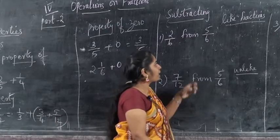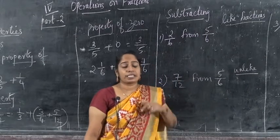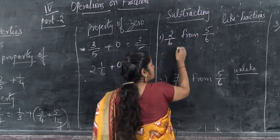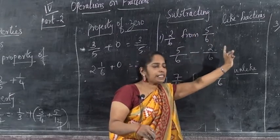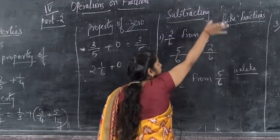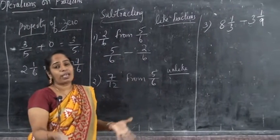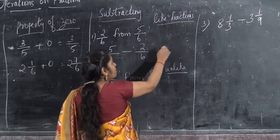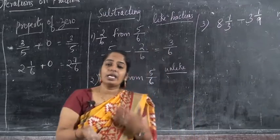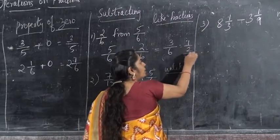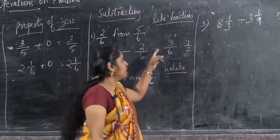Next is subtraction. Here, subtracting like fractions is the same as addition. Here you have 2/6 from 5/6. Subtraction means 5/6 minus 2/6. The answer is 3/6, and in simplest form that is 1/2, because 3 ones are 3 and 3 twos are 6. You must cancel and simplify like this.